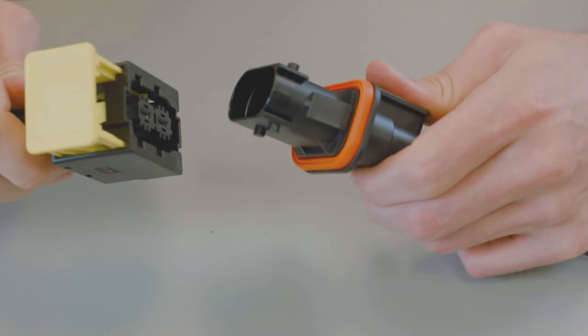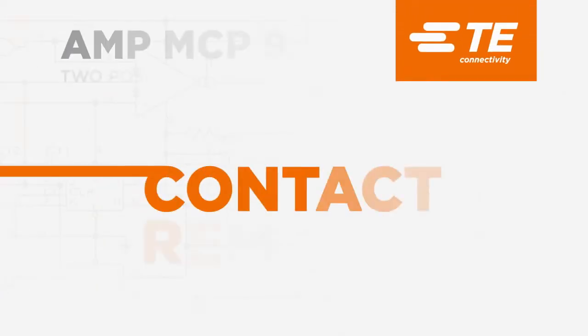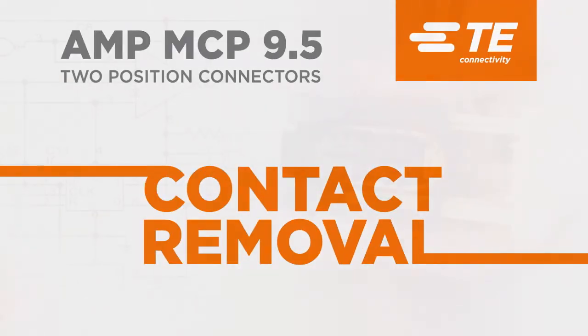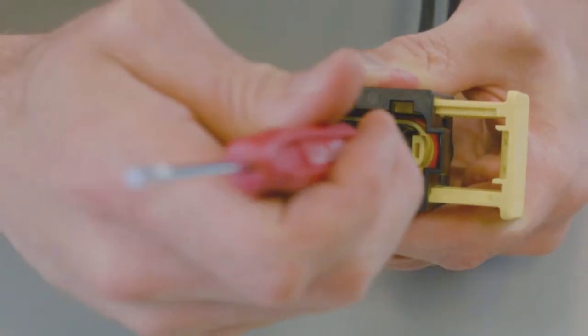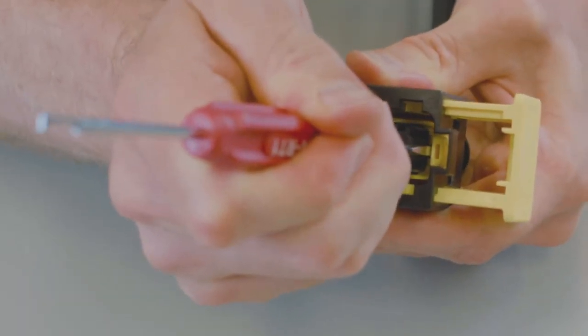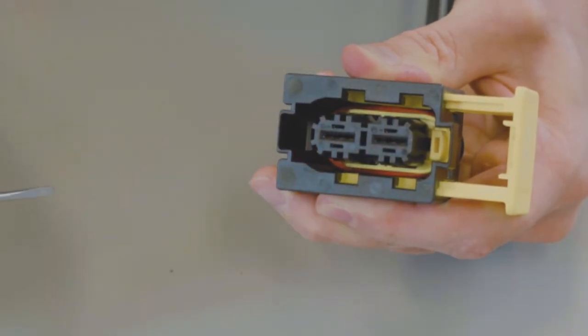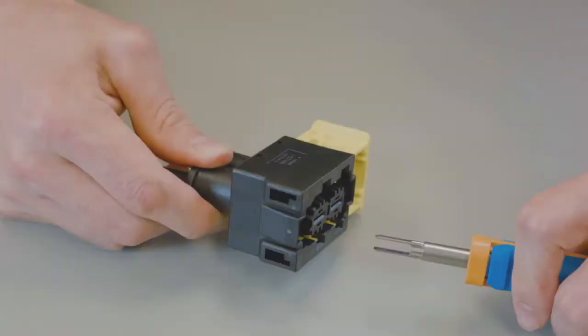Connectors must be unmated to remove the contacts. Using a DT-RT1 or a screwdriver, slide the integrated secondary lock into the unlocked position.